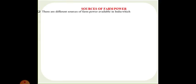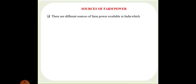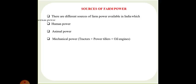The sources of farm power available in India include human power, animal power, mechanical power which includes tractors, power tillers and oil engines, electrical power, and renewable energy which includes biogas, solar energy and wind energy.